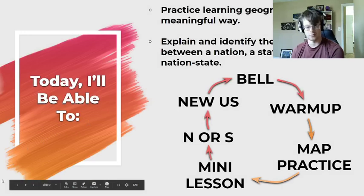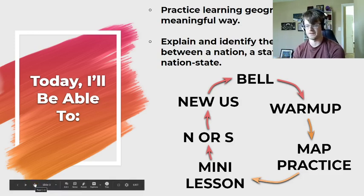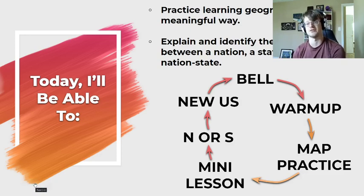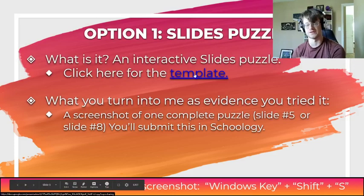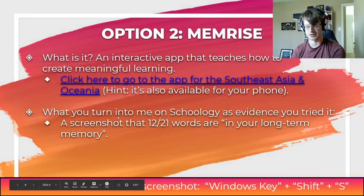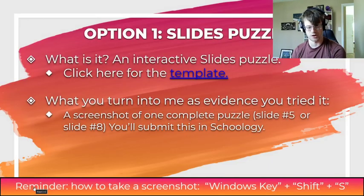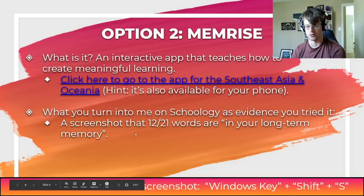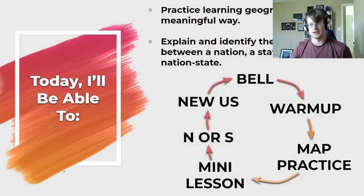We are going to look at some geography we have to do for this unit, and then we're going to look at what's going to be the base understanding for our nation-state unit. The mapping for this unit is going to be Southeast Asia and Oceania. You have a slides puzzle you can do and take a screenshot — either when you complete it or use the memorize option. Take a screenshot of the third puzzle in that set and turn it in on Schoology, or if you do memorize, you need to show that 12 of the 21 words are in your long-term memory.